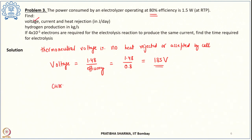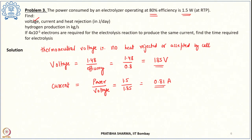The current is found as power divided by voltage. Power is 1.5 watt and voltage is 1.85 volt, so the current comes out to be 0.81 ampere. This is the current asked in the first part of the problem.